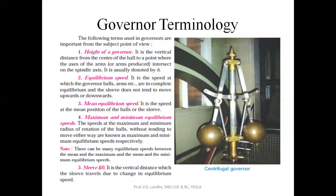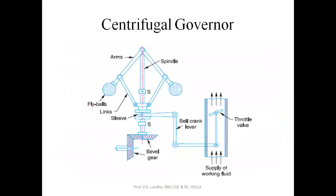This is basically the line diagram of the governor. The governor takes speed from the engine through the bevel gear system. As per the load on the engine, either increasing or decreasing, simultaneously the speed increases or decreases, which moves the fly balls outward or inward. The spindle and sleeve are shown here. When the balls move outward, the sleeve moves upward, trying to control the fuel supply — it shuts off the throttle valve through the bell crank lever system. When it moves downward, it opens the system so maximum fuel supply takes place towards the engine. The basic role of this governor is to meter in the supply of fuel towards the engine, so as to increase the efficiency of the engine.